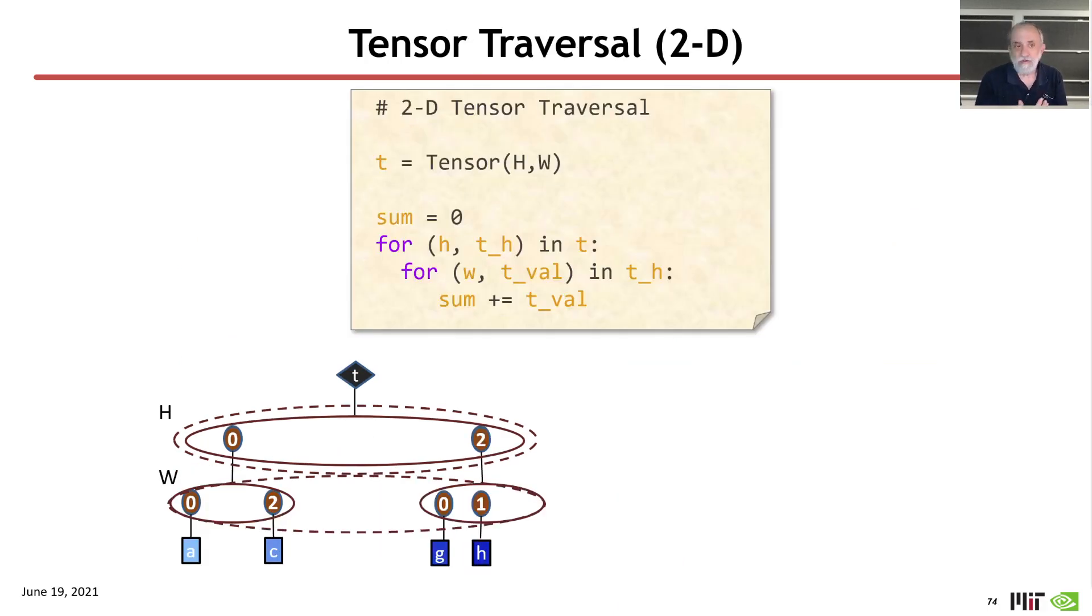Okay, slightly more complicated example, what if we want to do a traversal of a two-dimensional tensor, okay? So now the outer loop here, the outer for loop, is going to be traversing that single fiber in the top rank of the tree, the single fiber in the top rank of the tree.